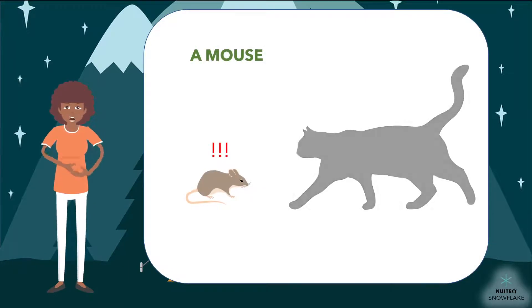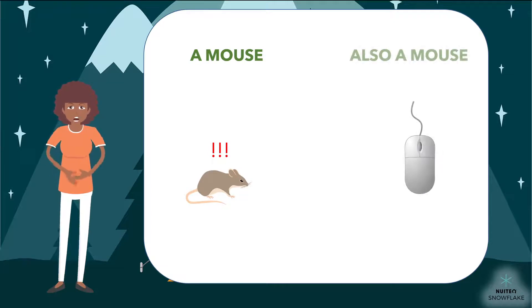But another use of the word mouse is as a technical term that has to do with computers. We can use that mouse to move a cursor around on our computer and click on different things. So, the word mouse means two very different things, depending on the context.